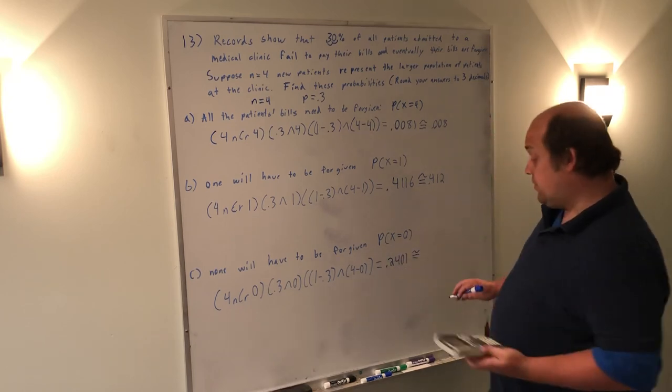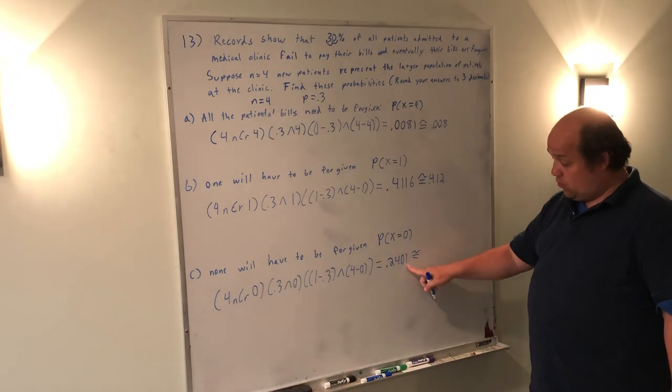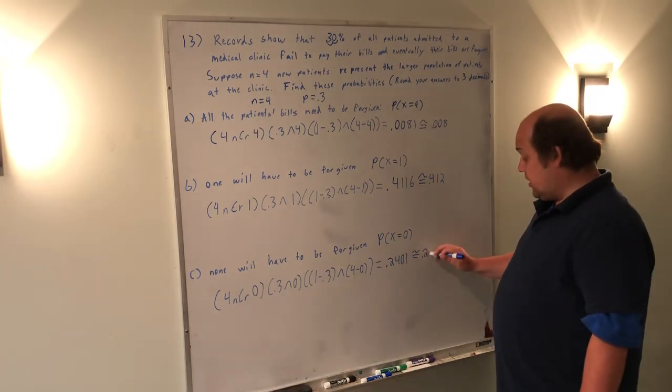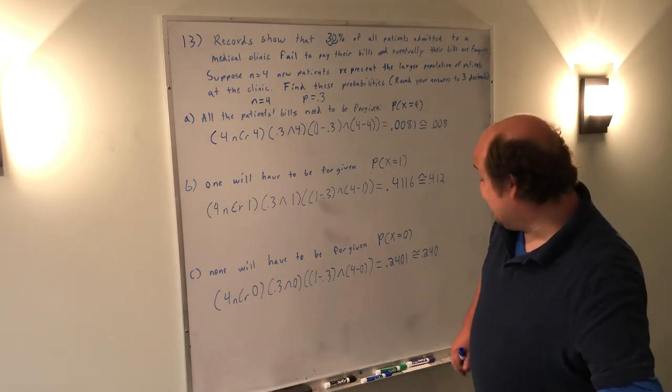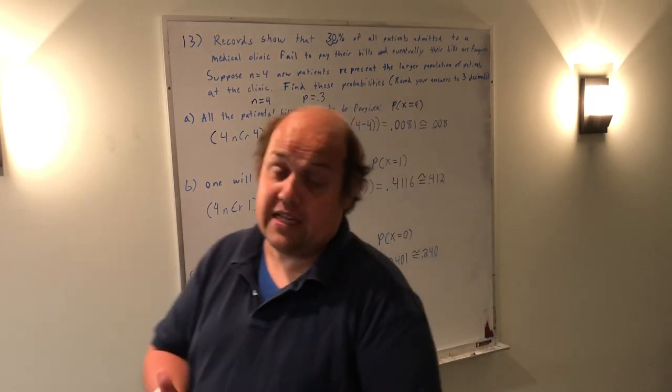Again, I'm going to round to three decimals, because that's what the instruction said. The one is what I'm dropping, so I can just leave it as 0.240, because that 1 is less than 5.